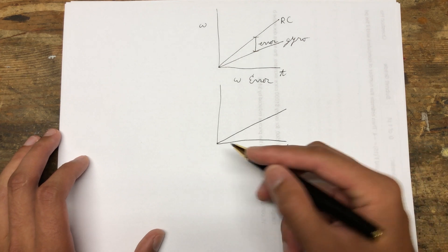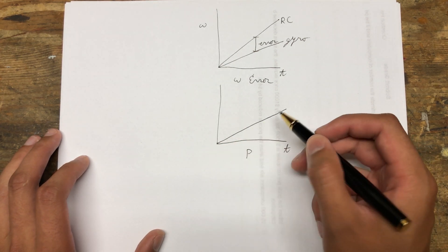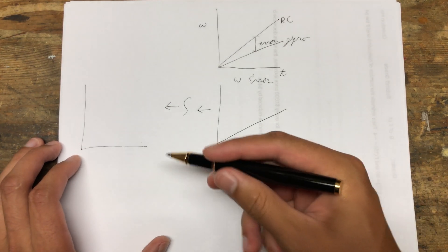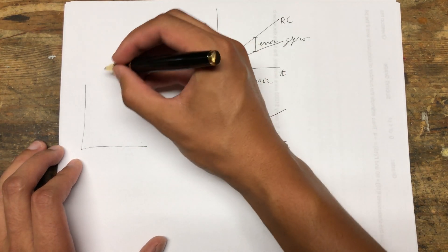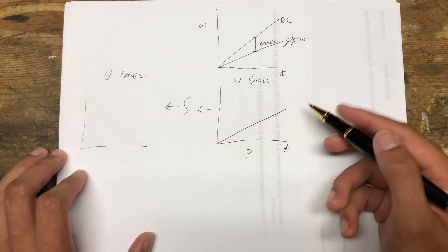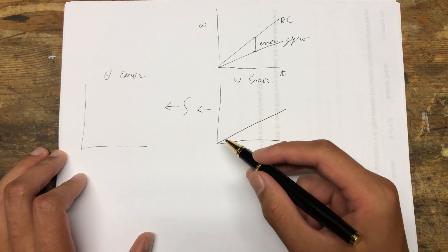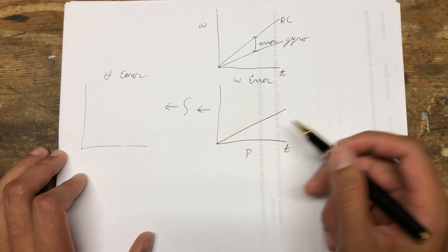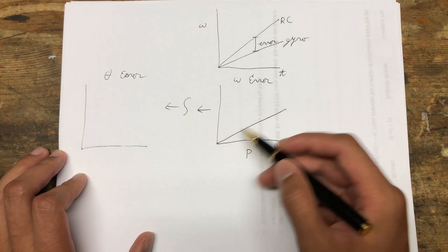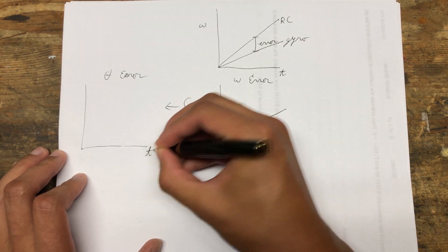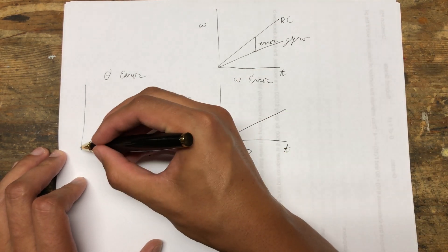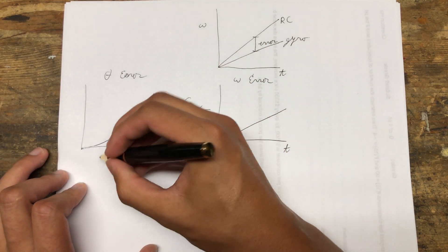Now, if we integrate this graph, this error, this is actually going to give us our positional error, theta, our angle. The integral is just the area under the curve. So if we just look at this graph as time goes on, we can plot the area under the curve.